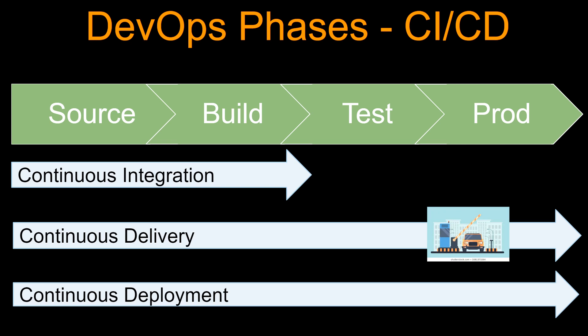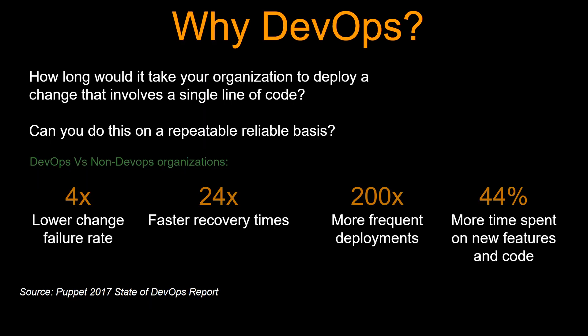So these three terms are very important: continuous integration, or CI, and continuous delivery and continuous deployment, also termed as CD.